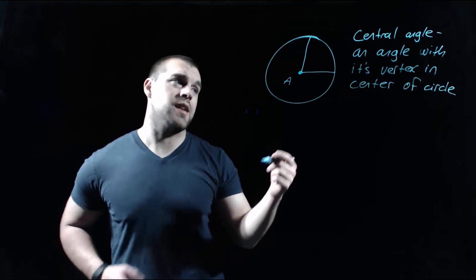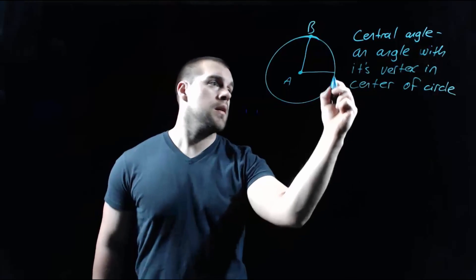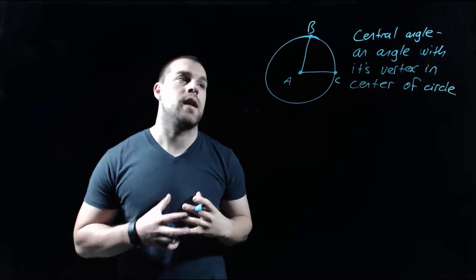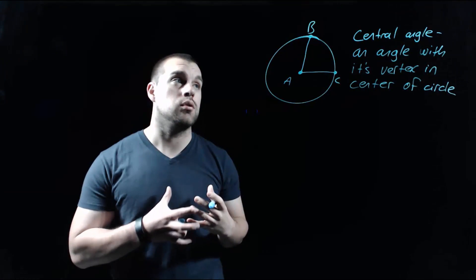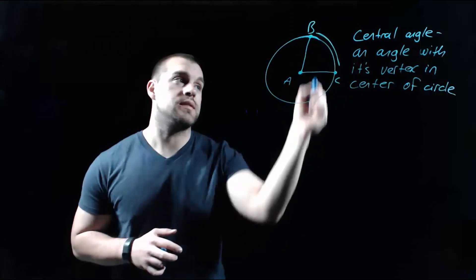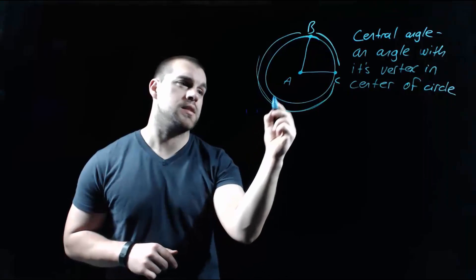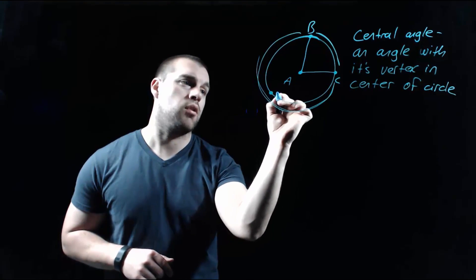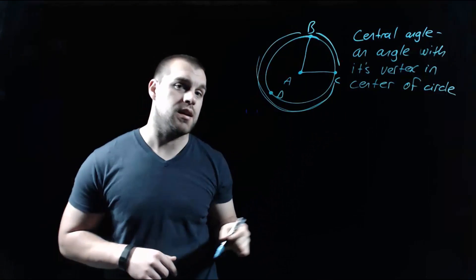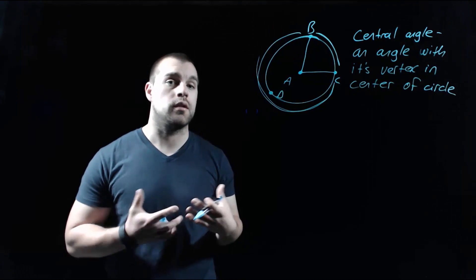Let's also label the endpoints of our radii. Let's call the point up here point B, and let's call this point C. What this angle does is it actually splits our circle into two parts — there's a small part that runs from B to C, and then there's a bigger part which runs from B the long way around to C. Let's put another point out here, let's call this point D. So we would say that this piece runs from B to D to C. Now these portions of circles, or pieces of circles, are called arcs.